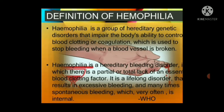Definition of hemophilia: hemophilia is a group of hereditary genetic disorders that impair the body's ability to control blood clotting or coagulation used to stop bleeding when a blood vessel is broken. It is a hereditary bleeding disorder with partial or total lack of an essential blood clotting factor. It is a lifelong disorder — genetic in nature, it stays with the patient lifelong — that results in excessive and many times spontaneous bleeding, which is very often internal.